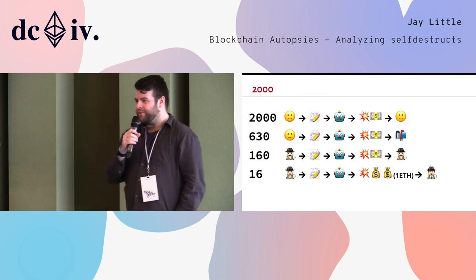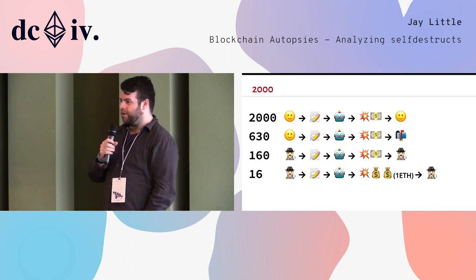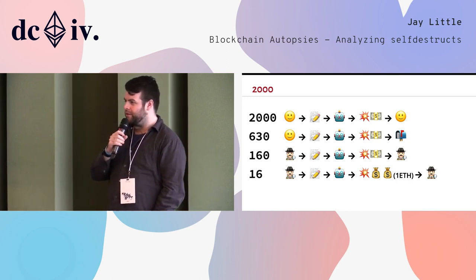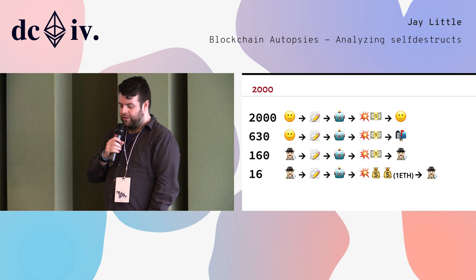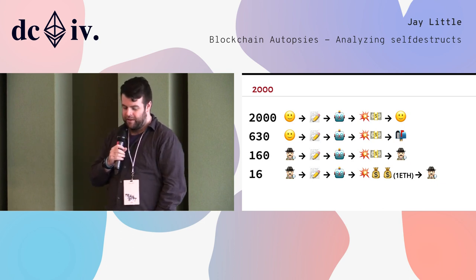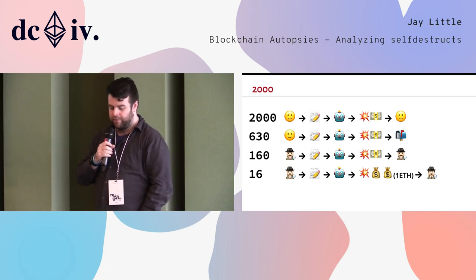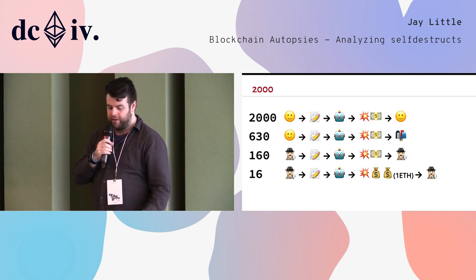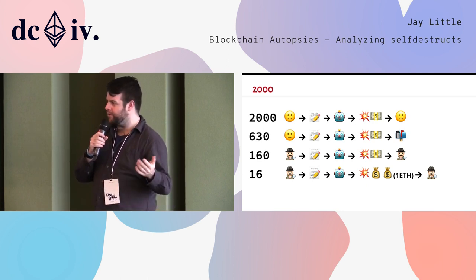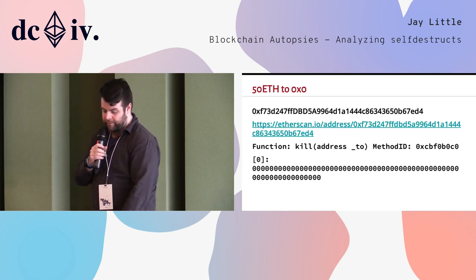After all this filtering, we're left with about 2,000 contracts that have been legitimately self-destructed that had code and now they don't. And again, if we apply some heuristics, out of the 25 that sent more than 0.1 ETH, there are only 16 that sent more than one ether when they were being destroyed.